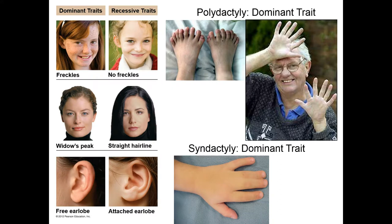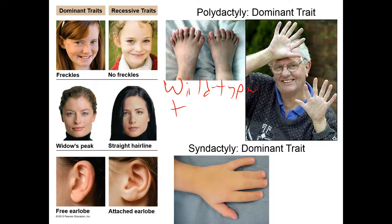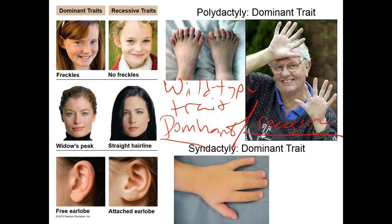One of the terms you'll come across is 'wild type.' A wild type trait is the one that is most predominant in the population. A wild type trait can either be a dominant trait or a recessive trait — just because a trait is recessive doesn't mean it's the most predominant trait in the population.